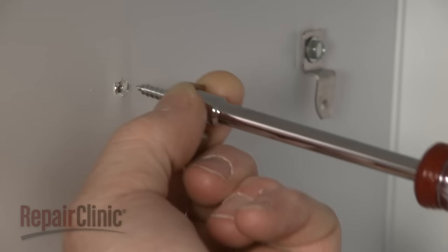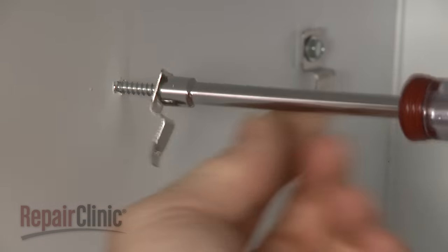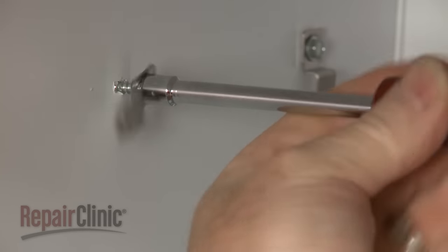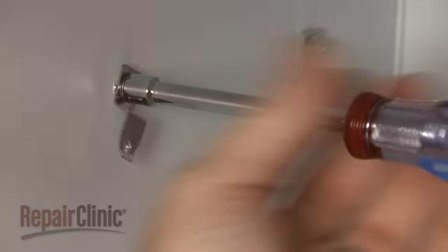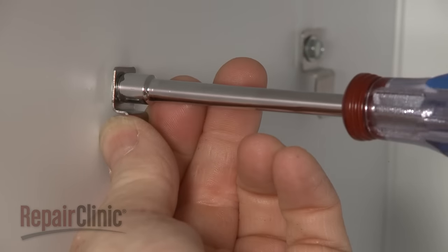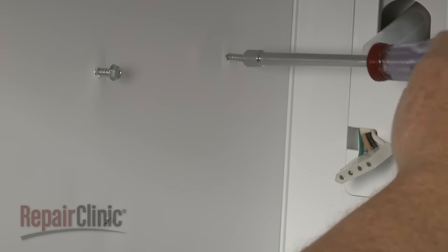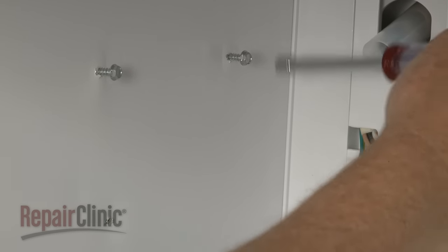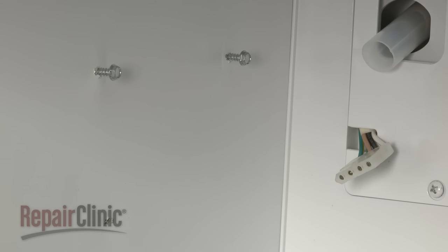For side-by-side models, you will need to secure mounting clips by threading and tightening three-quarter inch hex head sheet metal screws in the top holes. For models with the freezer on the top or bottom, simply thread the screws into the holes, allowing them to protrude out far enough to be able to hang the ice maker on them.